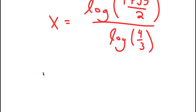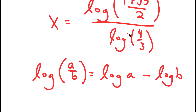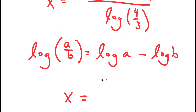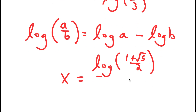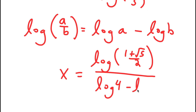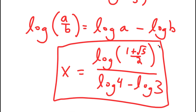Now using the logarithm property that log(a/b) equals log(a) minus log(b), I can rewrite log(4/3) as log(4) minus log(3). So my final answer is x equals log((1 + √5)/2) divided by (log 4 minus log 3).